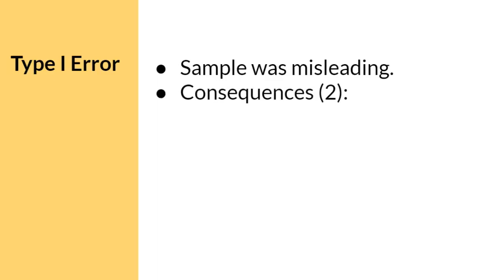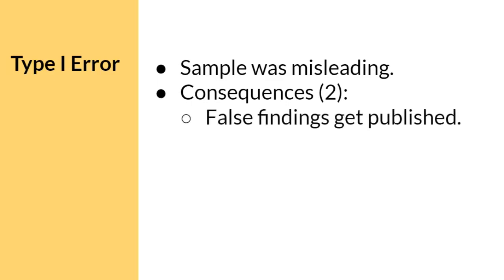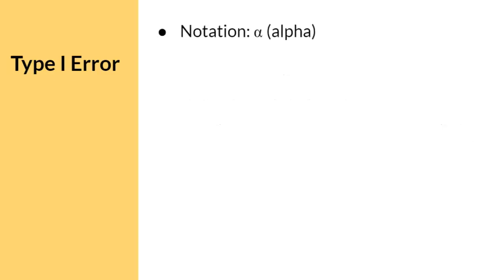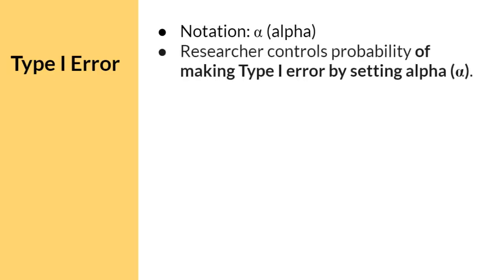There are two consequences of a type 1 error. Researchers love to publish results that show their scientific study worked, so false findings get published. These findings are used as basis for future research, and other researchers act on this information. Often, it is many years down the road when we find out that results were not accurate in the first place, but it's often too late. In statistical notation, we refer to the probability of a type 1 error as the Greek letter alpha. Alpha is another way of saying the significance level, or p. Recall in step 2 of hypothesis testing that we need to set criteria to make a decision. The researcher sets the significance level, either .05 or .01.